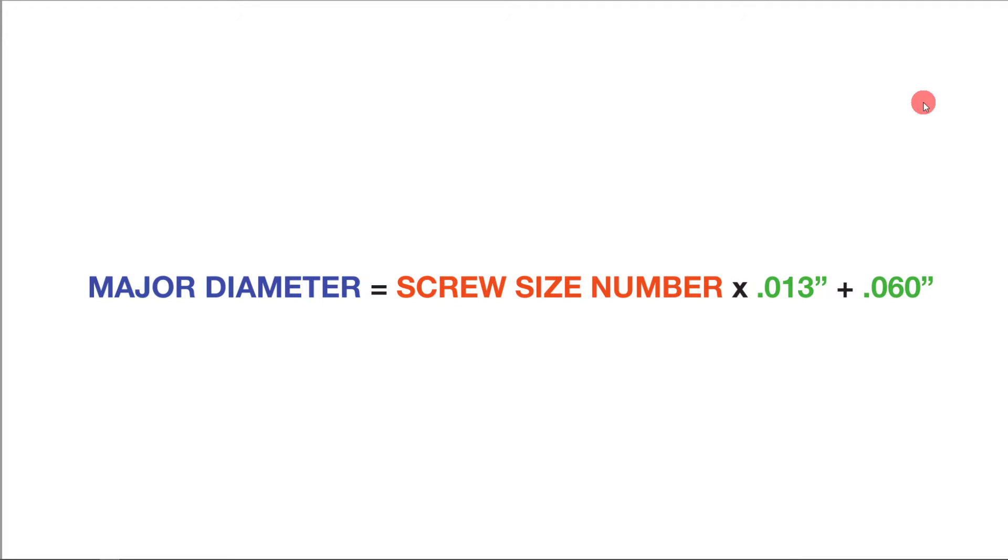In order to understand American screw sizes we need to understand the American screw size formula. The American screw size formula is equivalent to the screw size number times thirteen thousandths of an inch plus sixty thousandths of an inch. That's going to give you the major diameter of the screw.